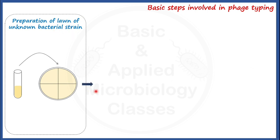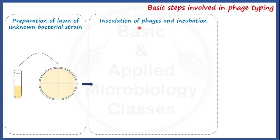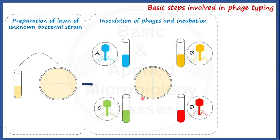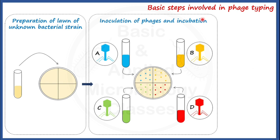In the second step, we inoculate phages onto the plate already inoculated with the bacterial culture. We take four different types of phage suspensions and perform spot inoculation of each phage type on the petri plate. After spot inoculation of phages, we proceed to the incubation step. Incubation is generally performed at 37 degrees Celsius for 24 hours.